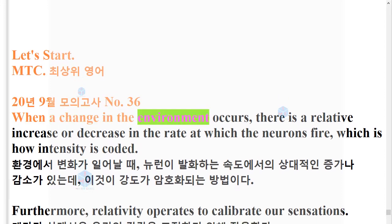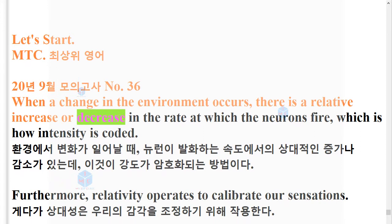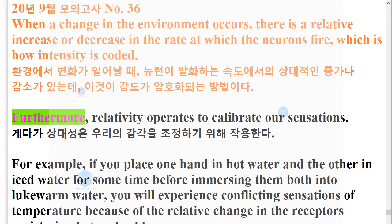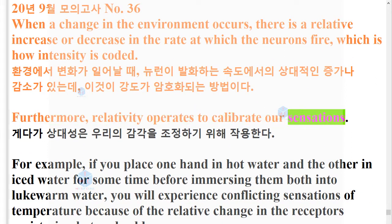When a change in the environment occurs, there is a relative increase or decrease in the rate at which the neurons fire, which is how intensity is coded. Furthermore, relativity operates to calibrate our sensations.